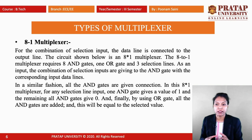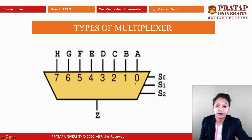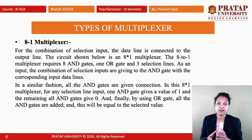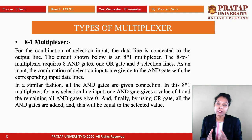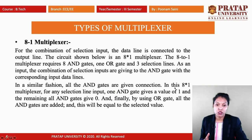Today we are going to discuss the 8-to-1 multiplexer. For a given combination of selection inputs, the data line is connected to the output line. An 8-to-1 multiplexer has 8 inputs and 1 output. It requires 8 AND gates, 1 OR gate, and 3 selection lines — S0, S1, and S2.